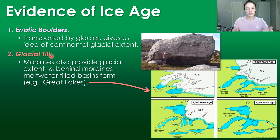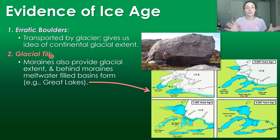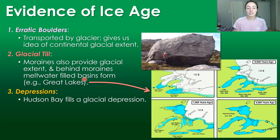But there are also lateral moraines on the sides of glaciers, so you have to be able to recognize these to really identify what the end moraine is. I talk about all this in my glacial depositional environments video, which I'll link up here to the right. Behind moraines are also meltwater-filled basins, sometimes forming large lakes like the Great Lakes.